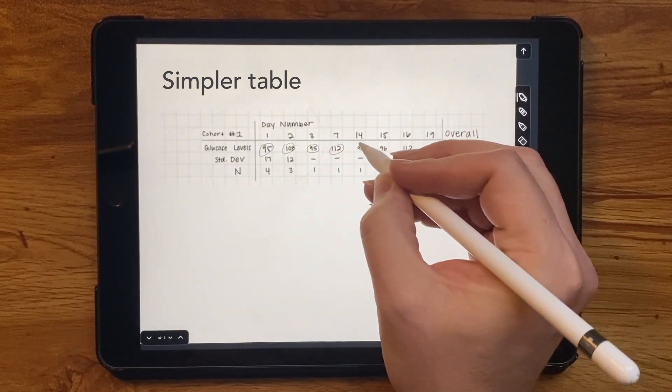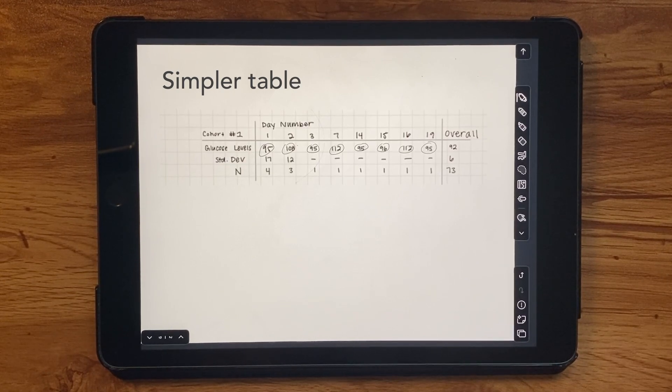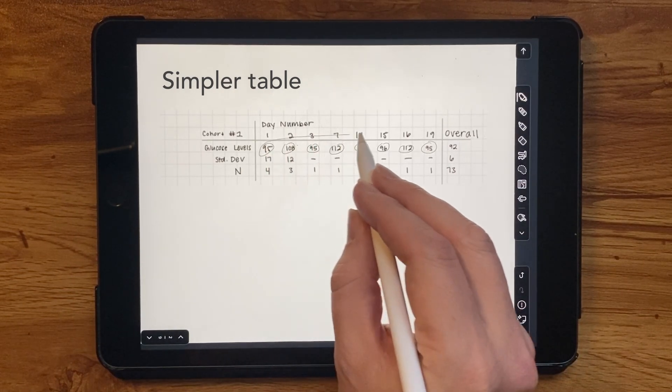However, by leveraging our verbal communication system, tables do require a lot of cognitive effort to process. For example, it's tricky to quickly see the trend in those glucose levels.